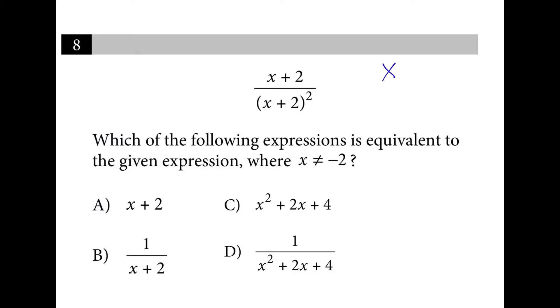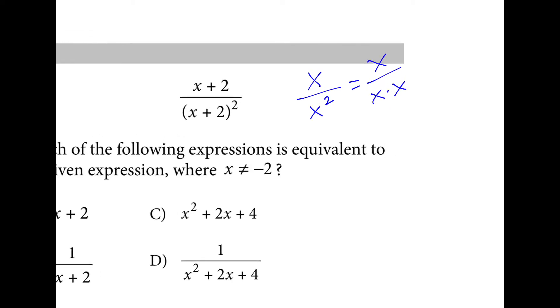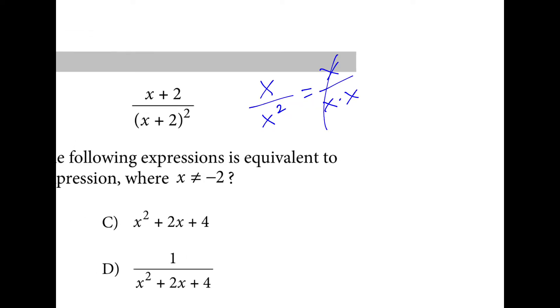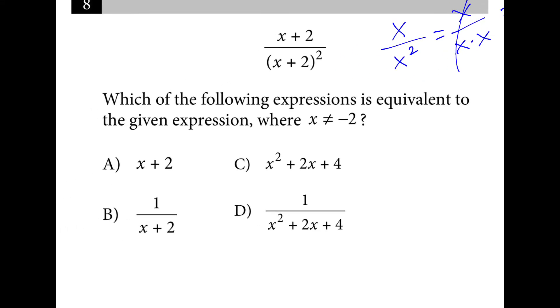If we thought of this as something like x over x squared, you could also think of this as x over x times x, and one of these would cancel out, and you could be left with 1 over x. Our x here is x plus 2, so 1 over x plus 2 is the answer.